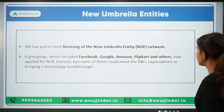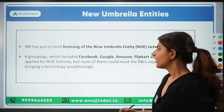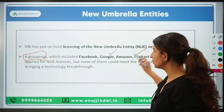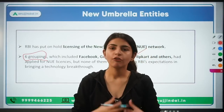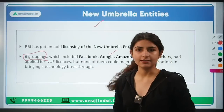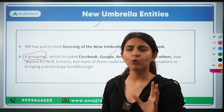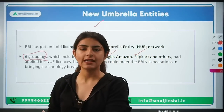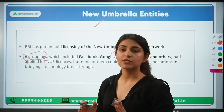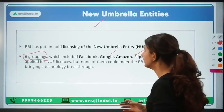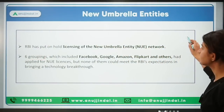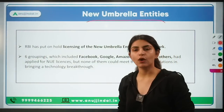The first news is about new umbrella entities. What has happened is there are certain groups — basically six groups — companies like Facebook, Google, Amazon. These companies have applied for a license to the RBI to become new umbrella entities. Currently, RBI has put all the applications for licenses of this NUE on hold. Let's understand what NUE — new umbrella entities — means.